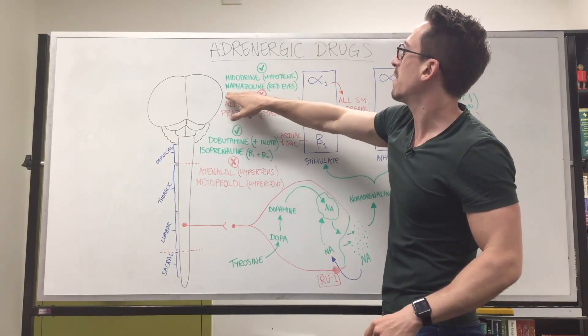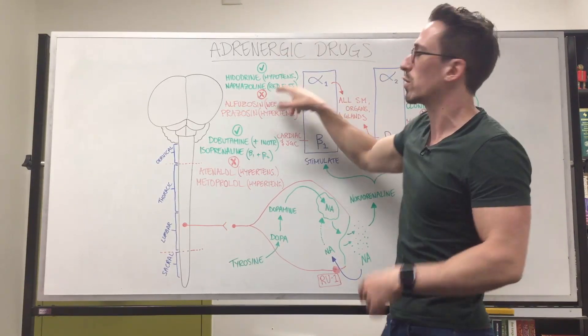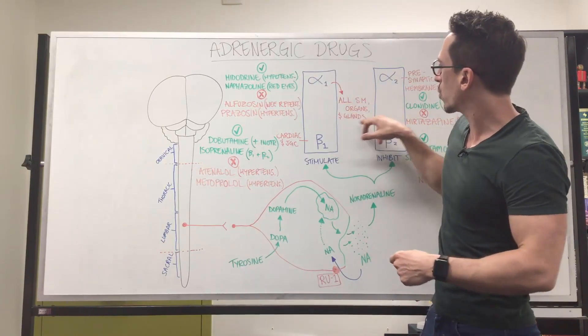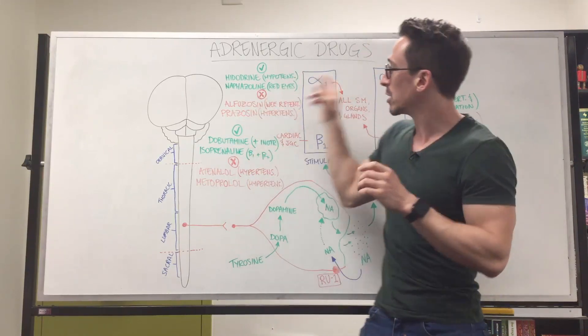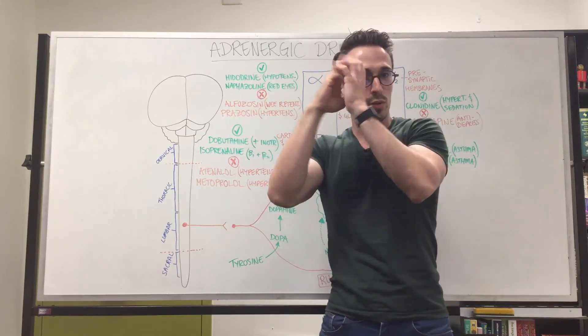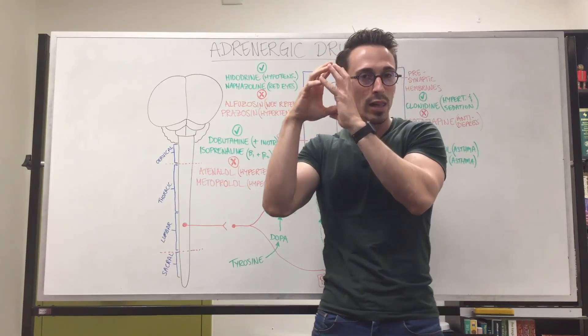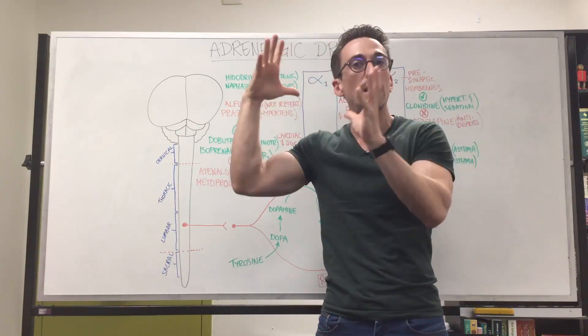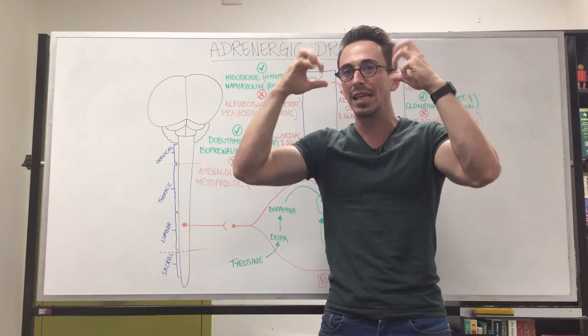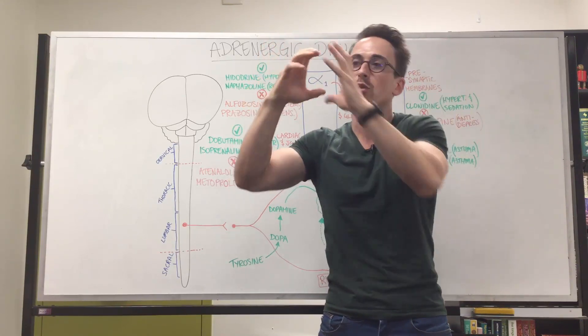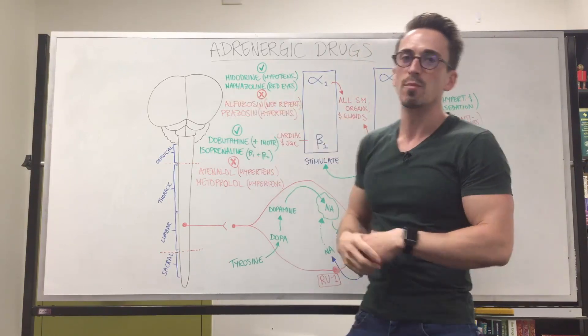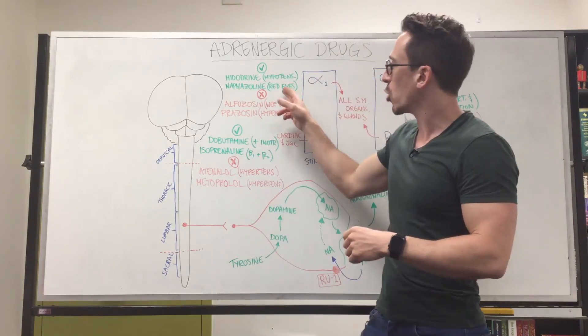We've got nevazoline. Nevazoline is there to treat red eyes. Why red eyes? Well remember, all smooth muscles, organs and glands, it's going to be constricting those blood vessels within the eyes as well. If you're going to have red eyes, it means these blood vessels are opened up too much and the blood starts to leak out a little bit and we need to constrict those blood vessels again. We can do this with nevazoline. Again, a side effect of this could be blurry vision.